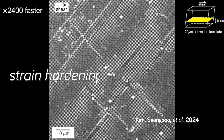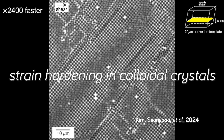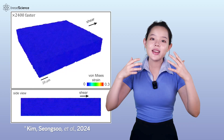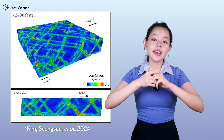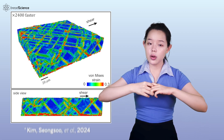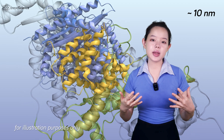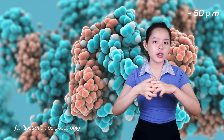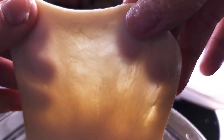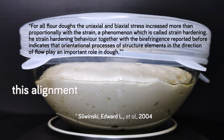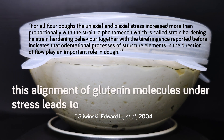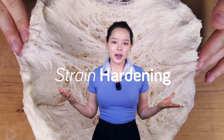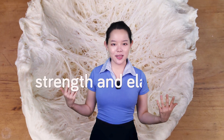Comparing with what happened to colloidal crystals in the study mentioned before, the entangled dislocation of the crystals ended up making the entire structure stronger — similarly, the entanglement and alignment of glutenin molecules lead to a stronger dough. In summary, this alignment of glutenin molecules under stress leads to strain hardening. The entire process is crucial for the development of the gluten network's strength and elasticity.